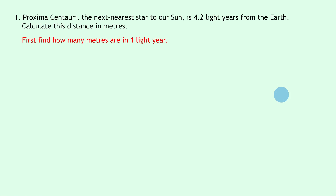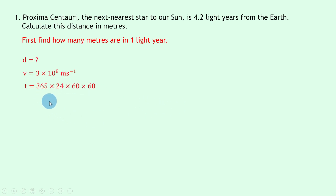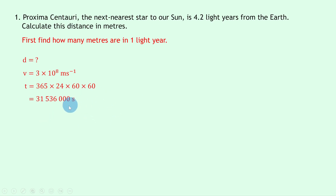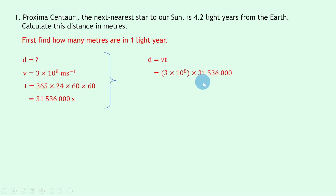The time is the number of seconds in one year. We're trying to find the distance of one light year in meters: d is what we're finding, v is the speed of light — 3×10⁸ meters per second from your data sheet — and t equals 365 days × 24 hours × 60 minutes × 60 seconds. You should get 31,536,000 seconds. Writing down our equation, d = vt, substituting gives 3×10⁸ × 31,536,000.